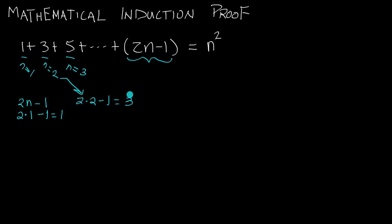That's how we get 3 for the n equals 2 term. You can do the same thing and find that when n equals 3, we get the value 5. So that's basically what this all means — it depends on the nth term how many terms we're going to, and all of those added together equal n squared.